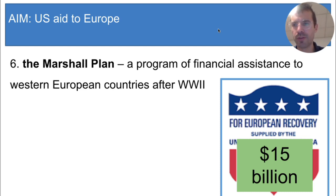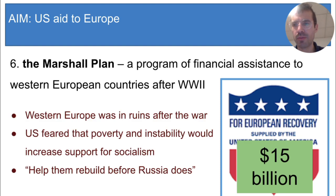The U.S. feared that without that money, there would be poverty and instability in Europe, which could increase support for socialism. Their thinking was that people in Western Europe were desperate and the U.S. needed to help them before Russia did. So that's the Marshall Plan.